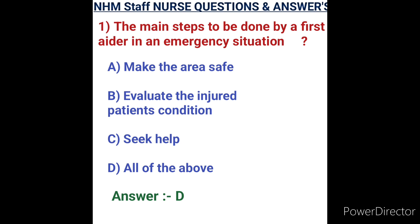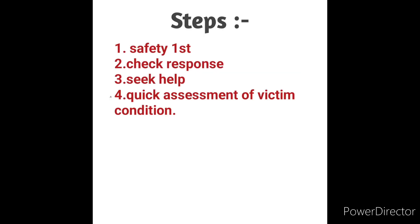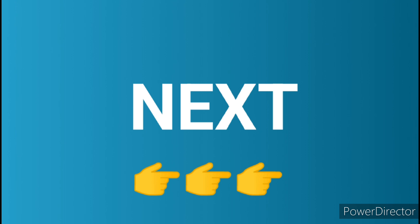Question number one: the main steps to be done by a first aider in an emergency situation. Options: A) make the area safe, B) evaluate the injured patient condition, C) seek help, D) all of the above. First aid means providing medical care to someone experiencing a sudden injury or illness, for example CPR. The main steps are: check safety, check response, seek help, and quick assessment of victim condition. Answer: option D, all of the above.